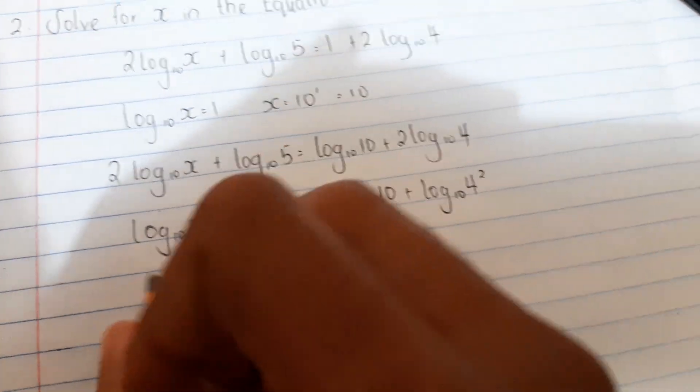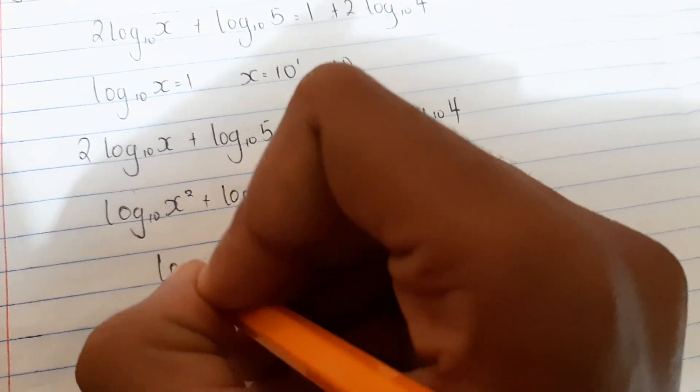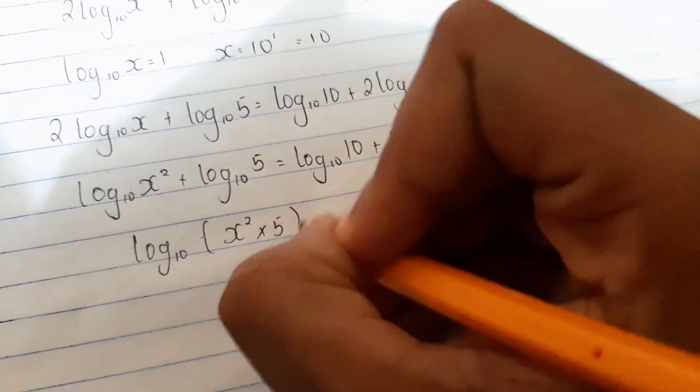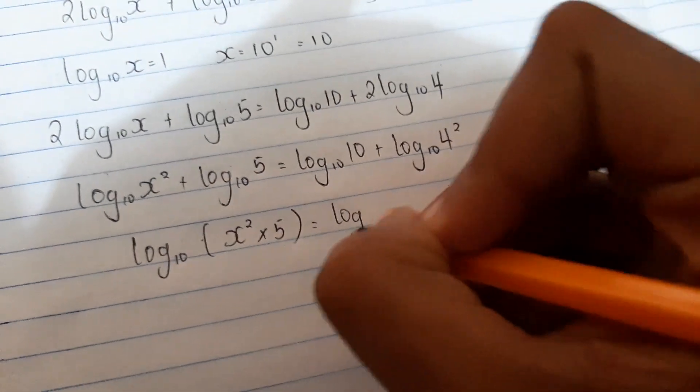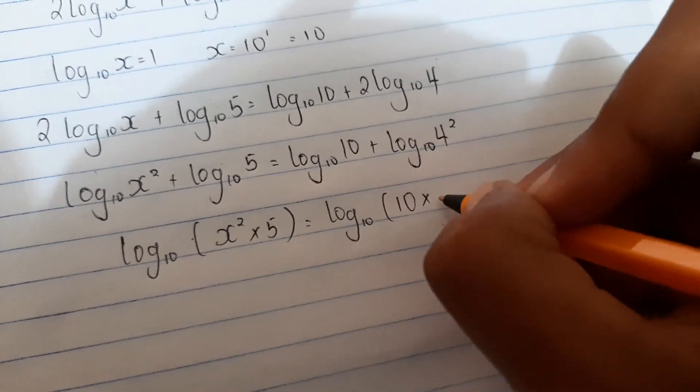Now we apply the property: log A plus log B equals log AB. So log base 10 of (x squared times 5) equals log base 10 of (10 times 4 squared), which is log base 10 of (10 times 16).